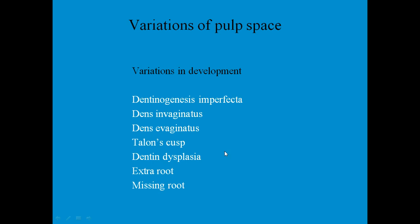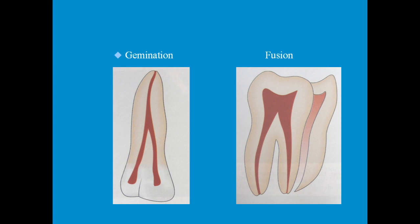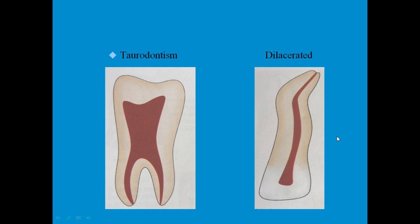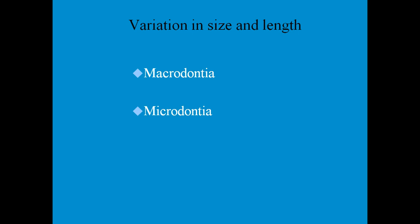Apart from normal variations, you should take a proper case history and examine the patient to check for developmental anomalies studied in oral pathology — such as gemination, fusion, taurodontism, and dilaceration. You should be prepared for all these situations before starting endodontic treatment; they should not be a surprise after entering the access cavity. Make sure you have all the necessary equipment to handle such challenging cases and avoid mishaps.